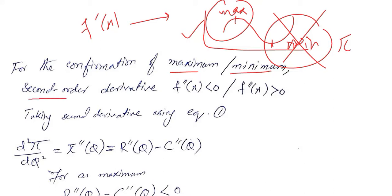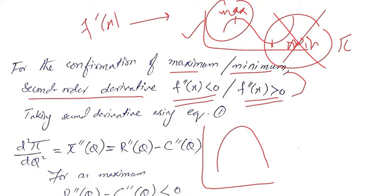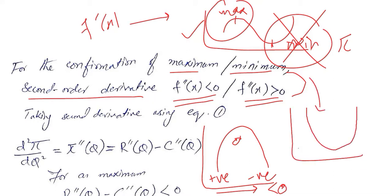The second order derivative condition is written for both possibilities. When there is a maximum, the second order derivative will be negative; in case of a minimum, it will be positive. At a maximum, the slope is initially positive, becomes zero, and then becomes negative — so the rate of change of slope is less than zero. At a minimum, the slope is negative initially, then becomes zero, then positive.